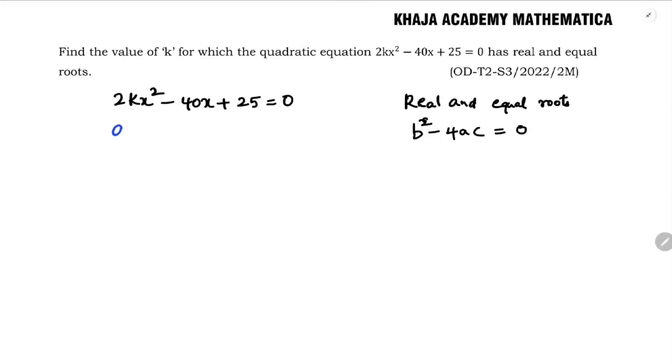Now if we compare with the standard quadratic equation which is ax² + bx + c, the value of a is 2k, b is -40, c is 25.